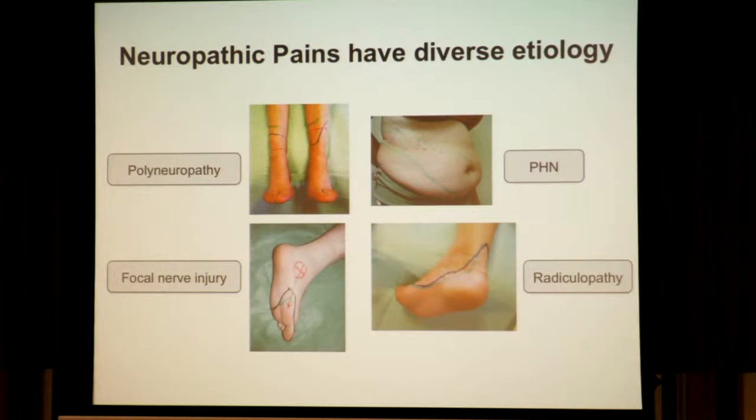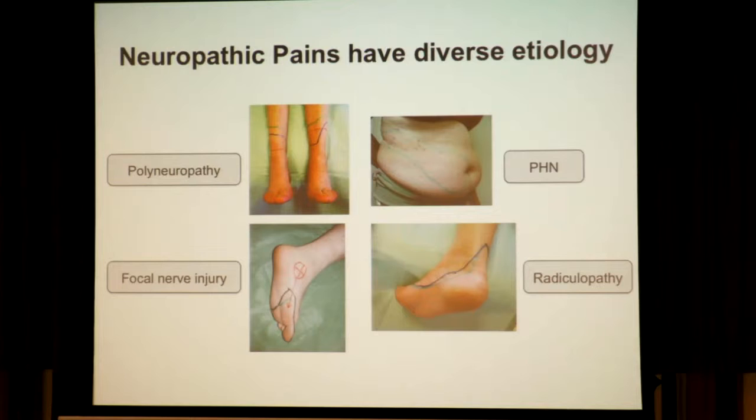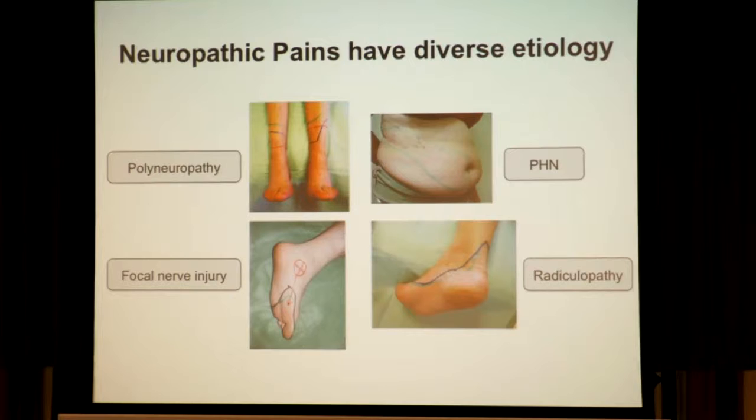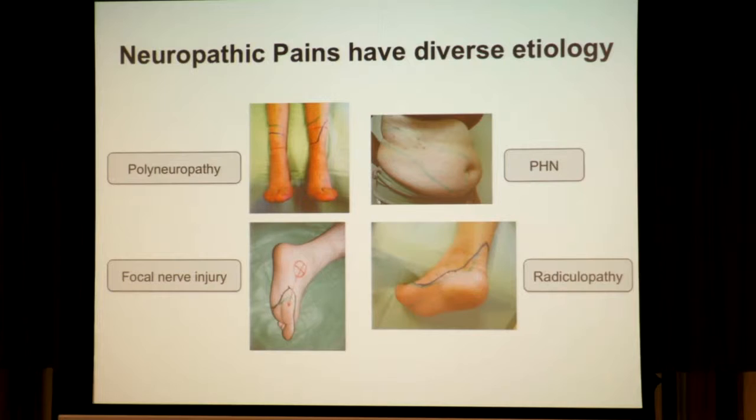Neuropathic pain is a condition that appears in patients who have diseases or damages to the peripheral nervous system. There are many etiologies that can end in this syndrome: polyneuropathies, focal nerve injury, viral infections and their sequelae like post-herpetic neuralgia, and radiculopathy. It's almost a mystery why so many etiologies end with the same syndromic presentation, and I think that's one of the key factors that has slowed down the development of new drugs in this field.